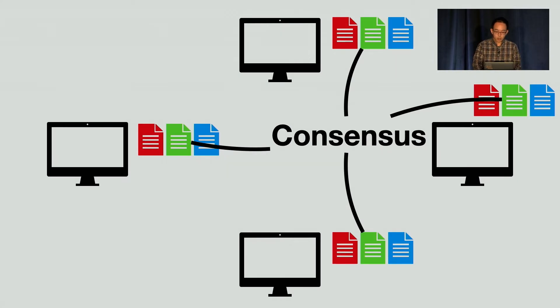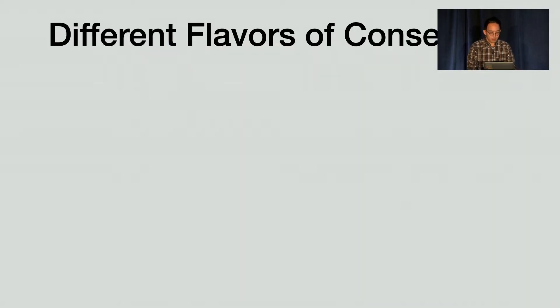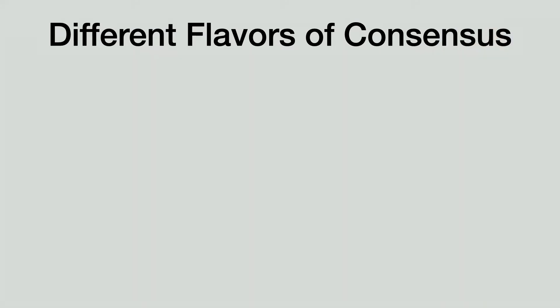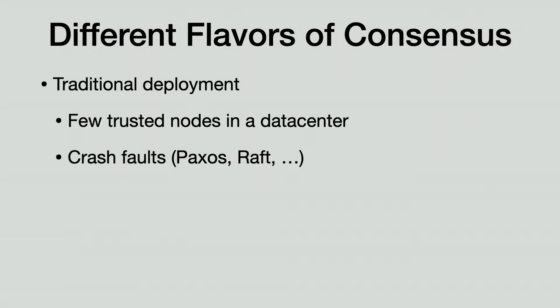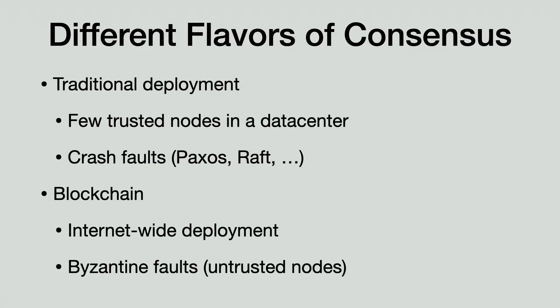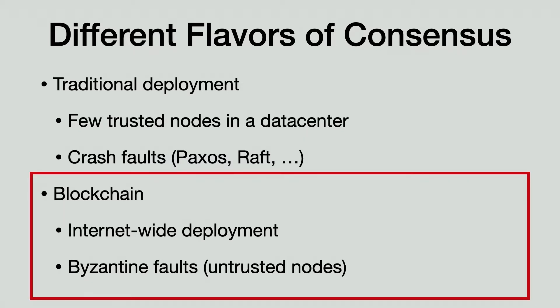Such an append-only log is useful for state machine replication, cryptocurrency, smart contracts, et cetera. There are different types of consensus for different applications. For example, you have protocols like Raft and Paxos. These are designed to run on a small network, and you trust that each server can at most crash. On the other hand, there's this new application called blockchains where you have little trust on individual servers, so it needs to tolerate Byzantine faults or arbitrary behavior of the faulty servers. This is what we focus on in this work.